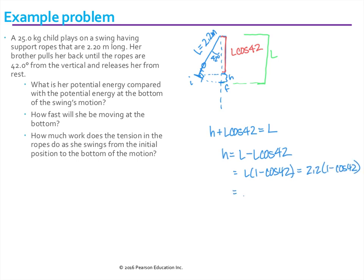If I do that, I find that my h is 0.565 meters. The first question then asks, so up here, initial point, the swing has all potential. And it would be equal to MGH.